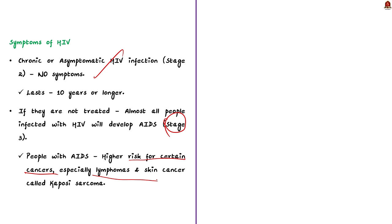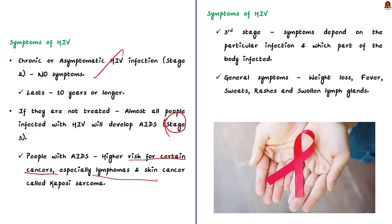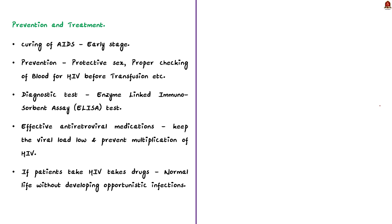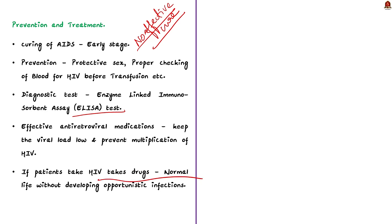In Stage 3, symptoms depend on the particular infection and the part of the body affected. General symptoms in people with HIV and AIDS are weight loss, fever, sweats, rashes, and swollen lymph glands. Although curing AIDS is still in its nascent stage and there is no effective cure, prevention includes protective sex and proper checking of blood for HIV before transfusion. A widely used diagnostic test for AIDS is ELISA (enzyme-linked immunosorbent assay). Effective antiretroviral medications are now available to keep the viral load low, allowing people with HIV to lead a normal life without developing opportunistic infections.